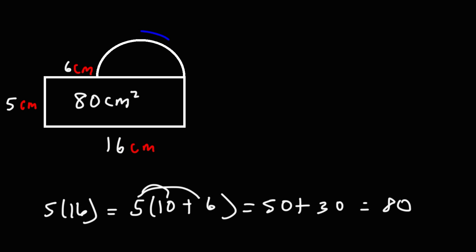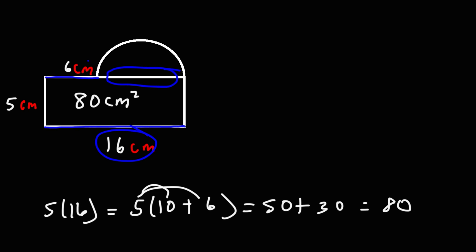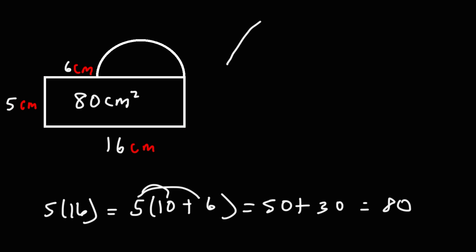In order to determine the area of the semicircle, we need to determine the radius. We know this part is 16 and this part is 6. So the diameter of this semicircle is going to be the difference of 16 and 6: 16 minus 6 is 10. So this part is 10 centimeters — that's the diameter. The radius is going to be half of that, so the radius is 5 centimeters.